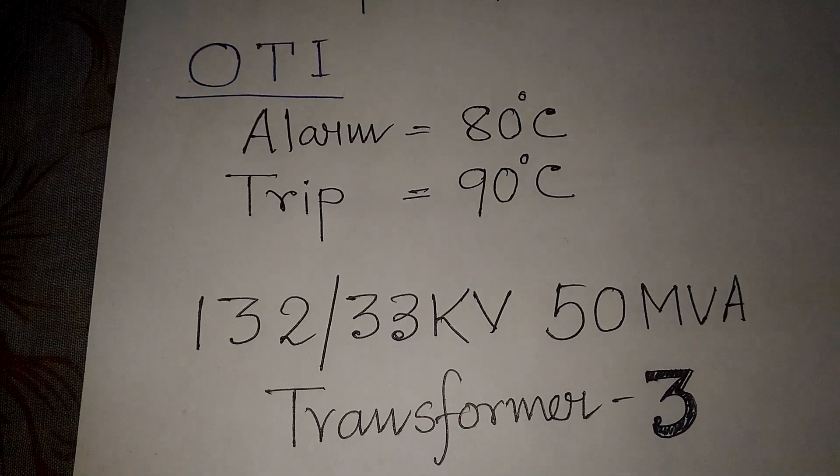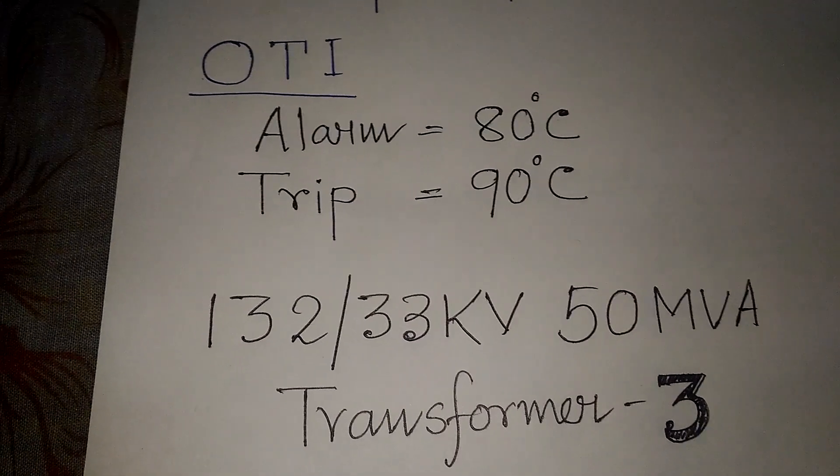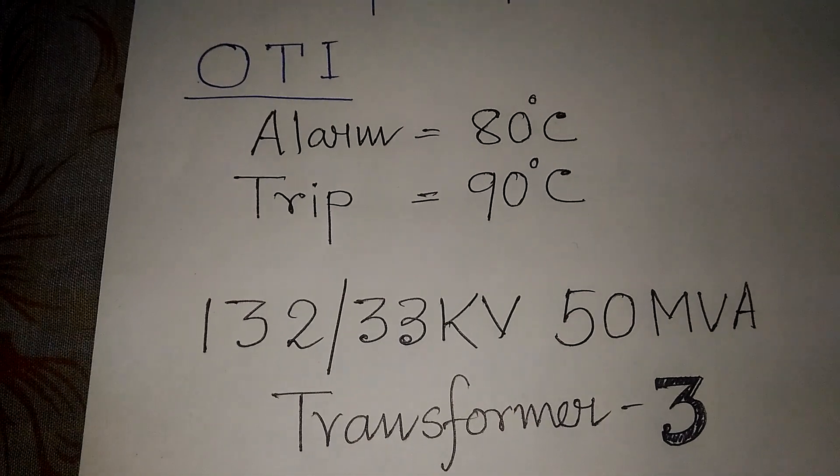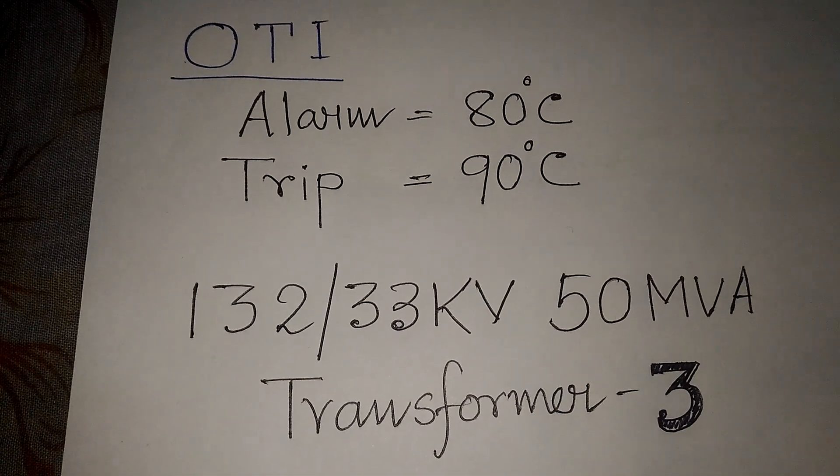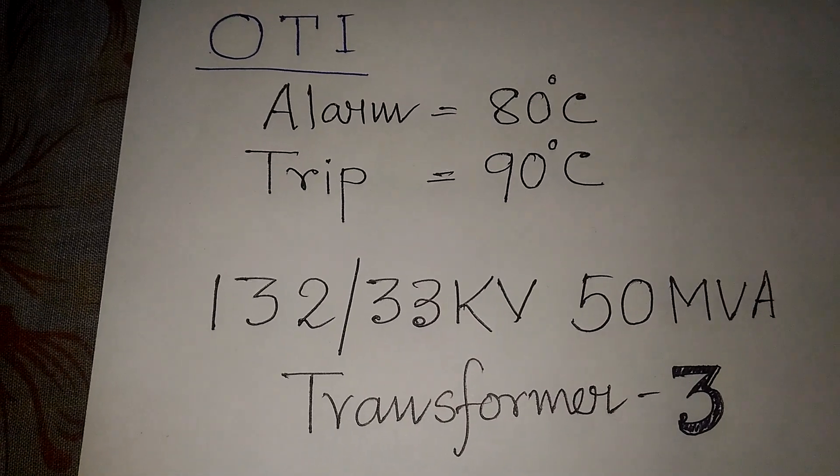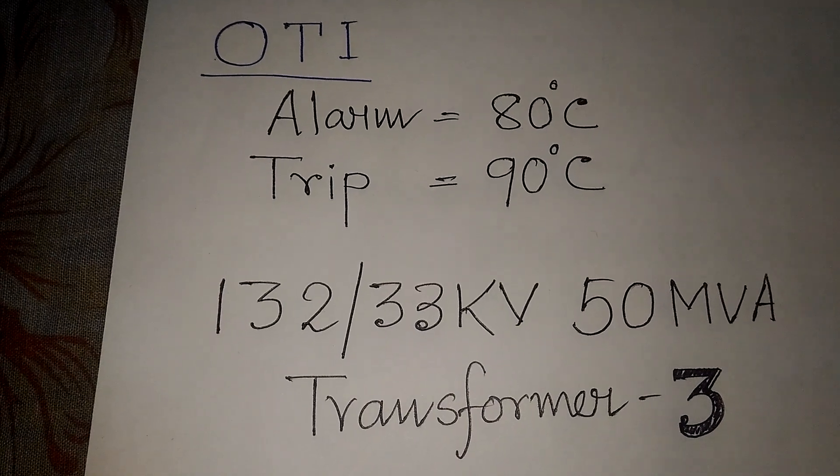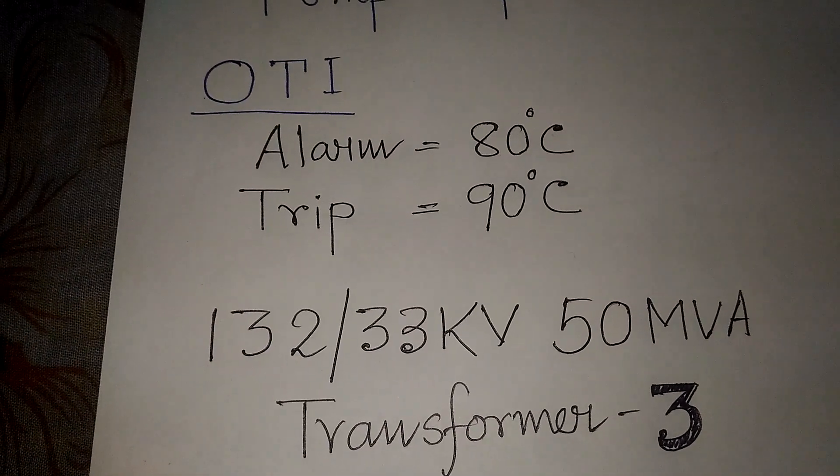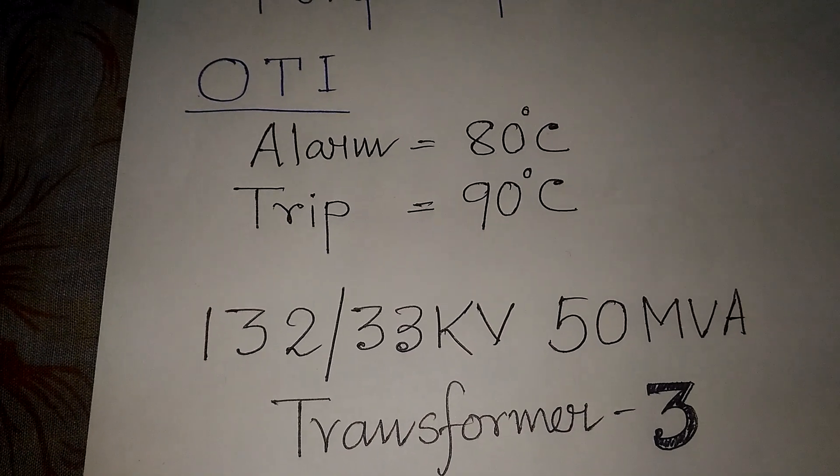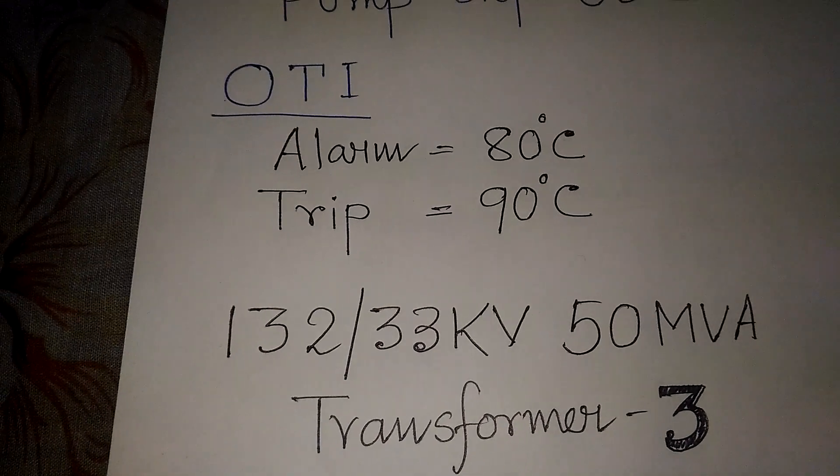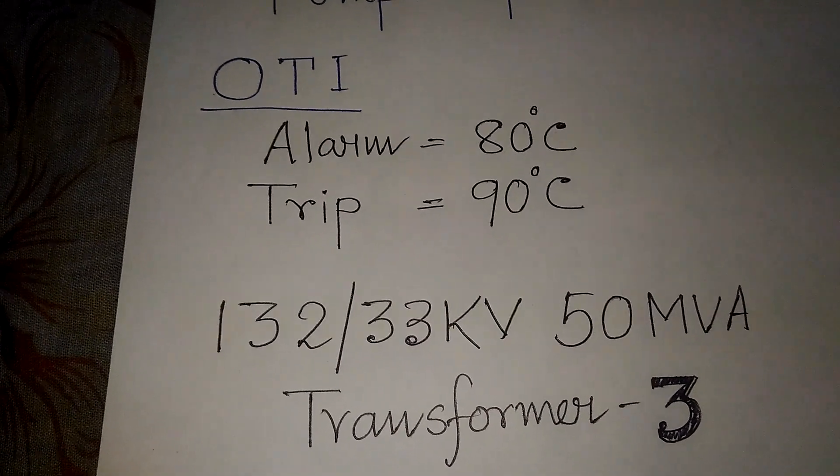The first position is for the remote control. We can operate the pump, we can operate the fan of the transformer cooling systems from RTCC. That RTCC panel is located at control room far away from the switcher transformers installed location.